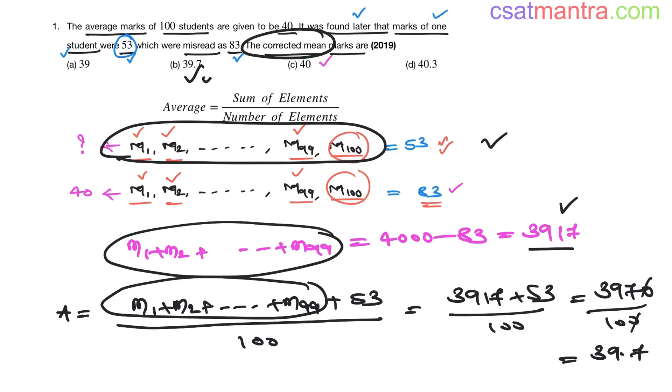So, our answer is B. Questions from the averages chapter are very simple. You should not miss them. Just apply this formula.